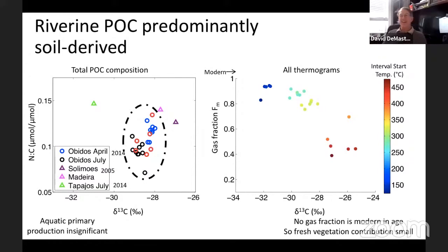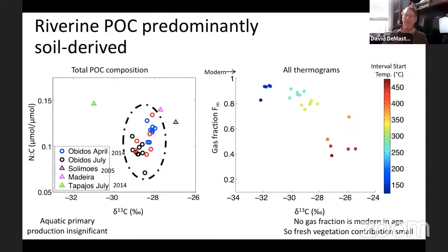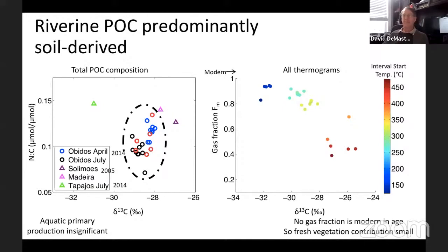Dave asked about grain size fractionation of POC to see if there was a coarse labile fraction versus a fine soil fraction, or a density fractionation, similar to the Hedges radiocarbon work which showed coarse fractions were very young (leaf litter) and fine fractions were thousands of years old. Sarah confirmed she did depth profiles of bulk radiocarbon and did do grain size analysis. Generally grain sizes were coarser deeper in the cross-section. She filtered everything above 22 microns rather than separating above and below 63 microns as Hedges did.